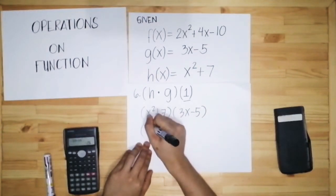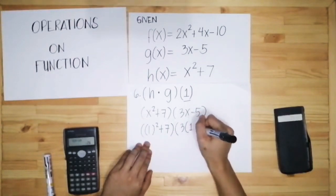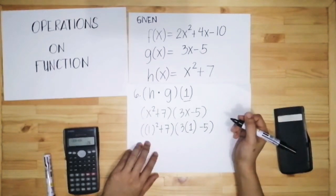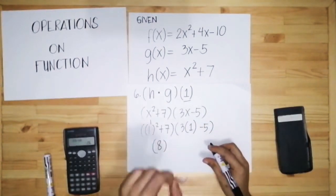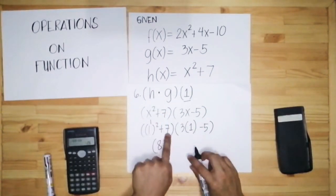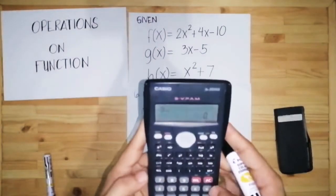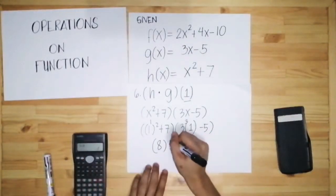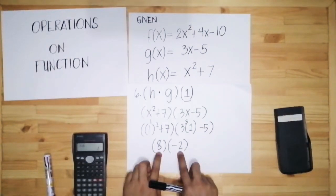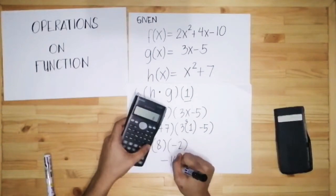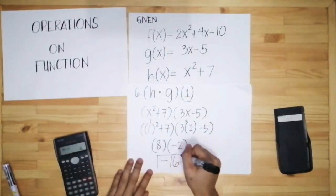We have 1 squared plus 7 for the first parenthesis, and 3 times 1 minus 5 for the second. Simplify: 1 squared is 1, and 1 plus 7 is 8. Then 3 times 1 is 3, and 3 minus 5 is negative 2. So we have 8 times negative 2. Multiplying: 8 times negative 2 equals negative 16. So the final answer is negative 16.